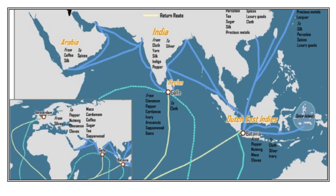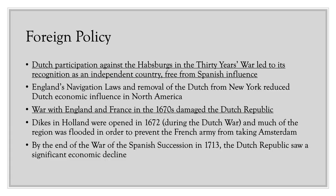This map shows some of the major trade routes of the Dutch East India Company in the Eastern Hemisphere. They had major business in Indonesia, Sri Lanka, India, and even Arabia. The type of things traded were almost entirely luxury goods — things that were really expensive and really valuable.